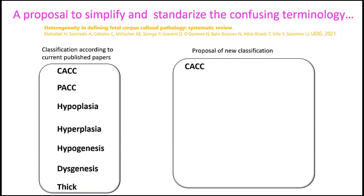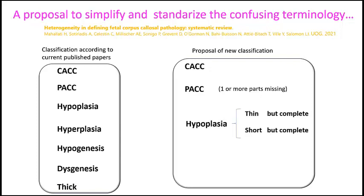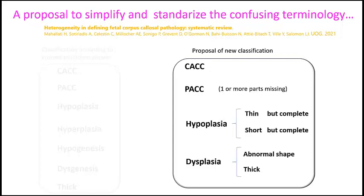In this proposed classification, we have a complete agenesis of the corpus callosum, and partial agenesis when one or more parts are missing. When the corpus callosum is complete but thin or short, we should talk about a hypoplastic corpus callosum. If it is thick or has an abnormal shape, we should talk about a dysplastic corpus callosum.